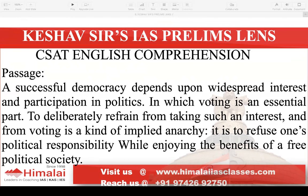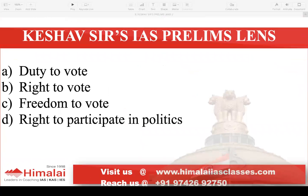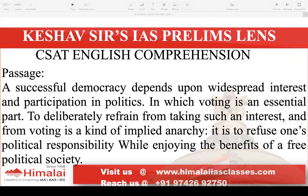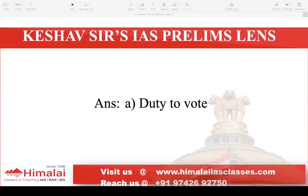Now let's see the CSAT English comprehension passage. A successful democracy depends on widespread interest and participation in politics, in which voting is an essential part. To deliberately refrain from taking such an interest and from voting is a kind of implied anarchy — it is to refuse one's political responsibility while enjoying the benefits of a free political society. The question asks what the passage is about: A. Duty to vote, B. Right to vote, C. Freedom to vote, D. Right to participate in politics. If you refrain from voting, you are refusing your political responsibility and implying anarchy while enjoying the benefits of a free political society. The passage is talking about your duty to vote. Answer is option A.